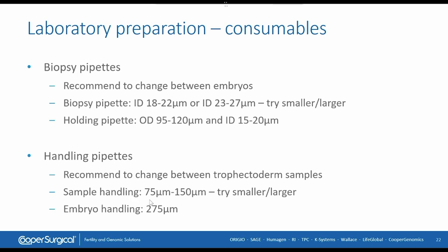For sample handling pipettes, we recommend between 75 and 150 micrometers, though some operators prefer larger pipettes. Smaller than 75 micrometers is more difficult. For embryo washing, we advise a 275 micrometer pipette, because if you go smaller, you risk removing the blastocyst from its zona pellucida.